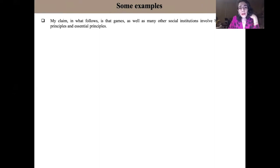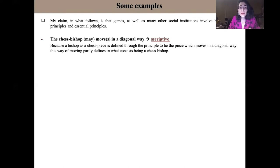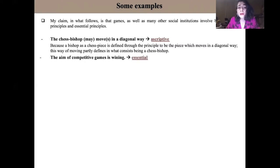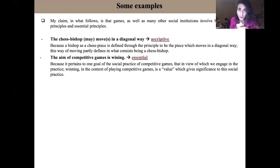Let's take a pair of examples from competitive games. The chess bishop moves in a diagonal way. This I categorize as an ascriptive principle because a bishop as a chess piece is defined through this principle to be the piece which moves in a diagonal way — this way of moving partly defines what a chess bishop is. Now take the principle according to which in competitive games the aim of the players is winning. This I categorize as an essential principle because it pertains to one goal of the social practice of competitive games — that in view of which we engage in competitive games. Winning is a value which gives significance to that social practice.